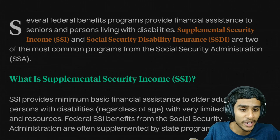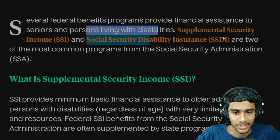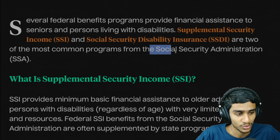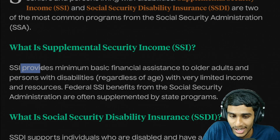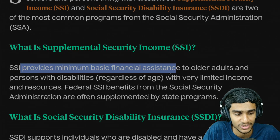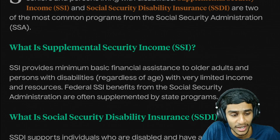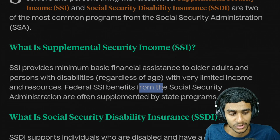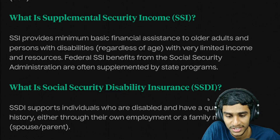Several federal benefit programs provide financial assistance to seniors and persons living with disabilities. Supplemental Security Income (SSI) and Social Security Disability Insurance (SSDI) are two of the most common programs from the Social Security Administration (SSA). SSI provides minimum basic financial assistance to older adults and persons with disabilities regardless of their age, though there is an important criteria: persons should have very limited income and resources. Federal SSI benefits are most often supplemented by state programs.